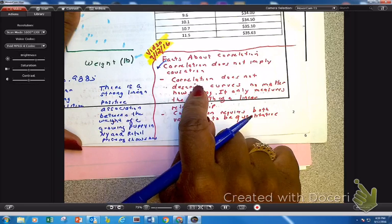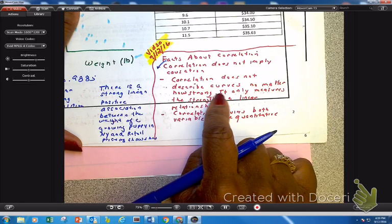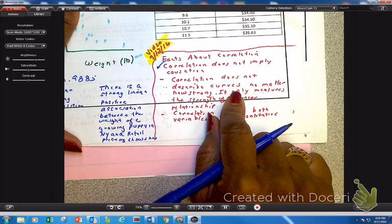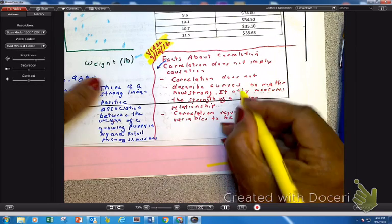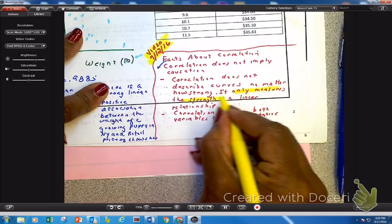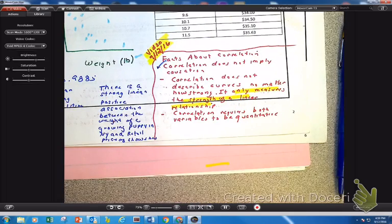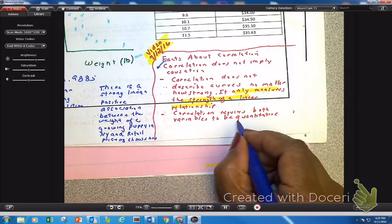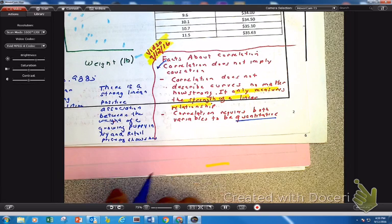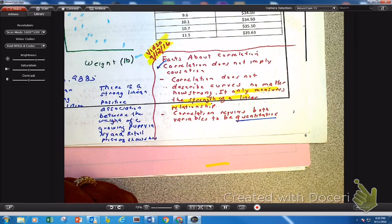Okay, another strong fact about correlation. Correlation does not describe a curve. So I've mentioned this to you before. Please remember that correlation, it only measures the strength of a linear relationship. And then the last thing, and again this is recapping the idea of correlation, correlation requires both variables to be quantitative. Okay, so the last thing I want to show you on correlation is a bunch of different graphs.